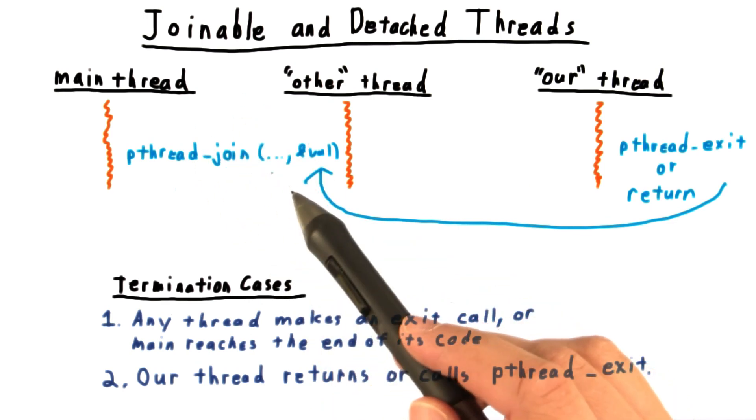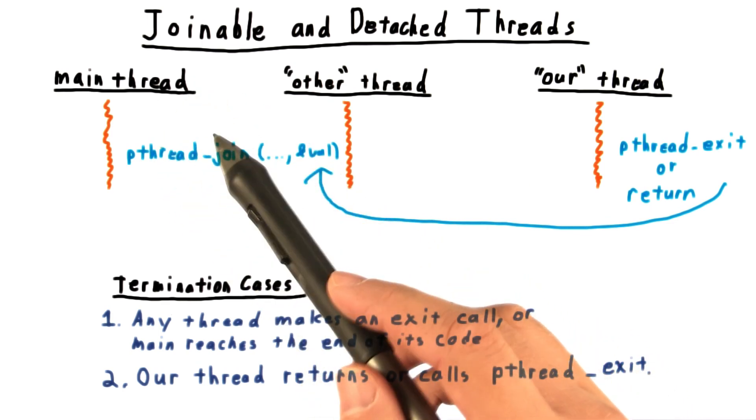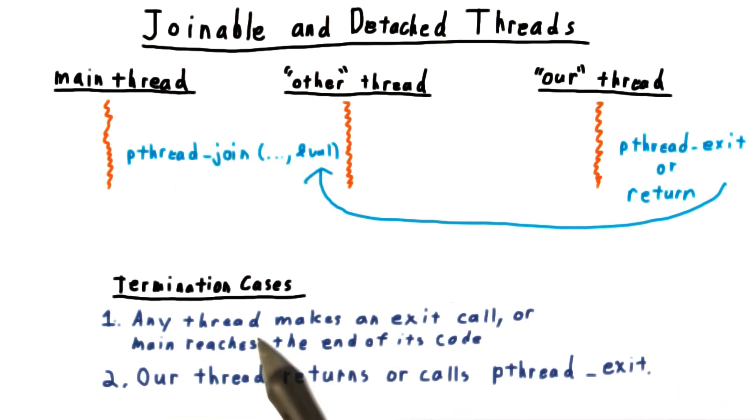Having main join with other threads is a common way to make sure that main doesn't finish before the other threads and kill them all via exit method one. By default, threads are joinable in the pthreads library.